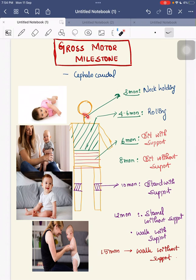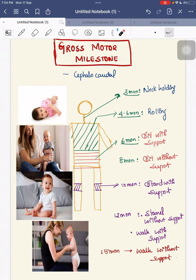At 3 months of age, the child develops neck holding. Coming to the 4th to 6th month of age, the child can roll over. So with the help of the chest, that is the trunk portion, the child can roll over.